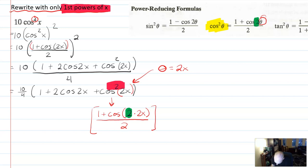And then that's over 2. And you could write that as 4x. And then we still have 10 over 4, which I'm going to reduce to 5 over 2. 1 plus 2 cosine 2x plus. And that's it.